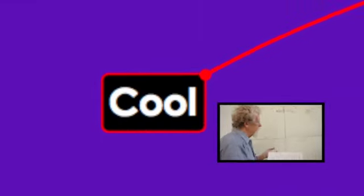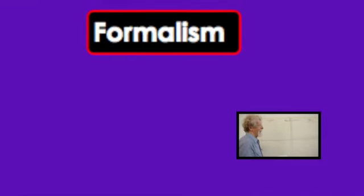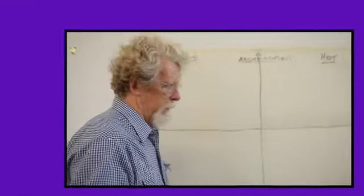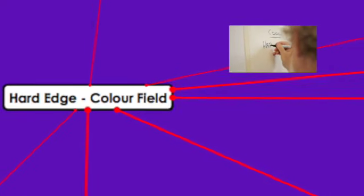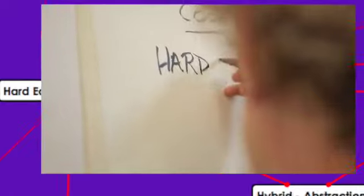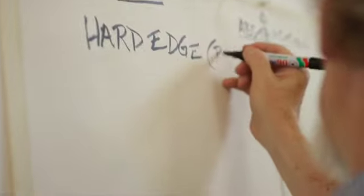Now, cool meaning with some kind of conceptual distance from the actual performative act and the actual material itself. The most obvious example of cool abstraction, if you like, is hard edge, or you might even call it pure abstraction.